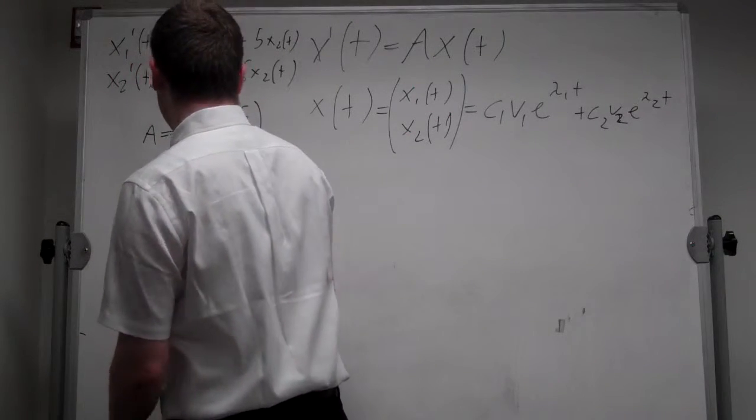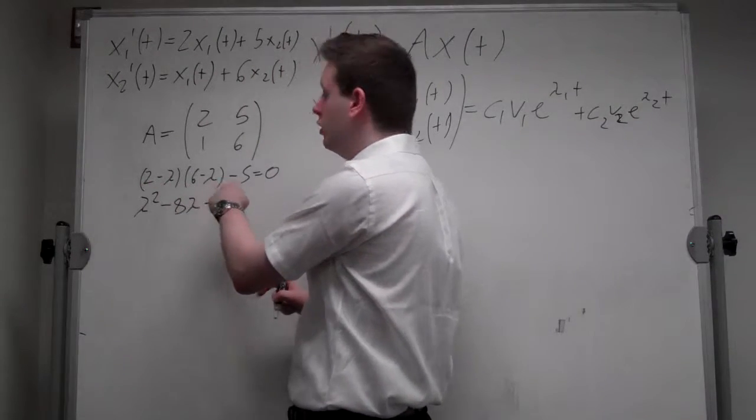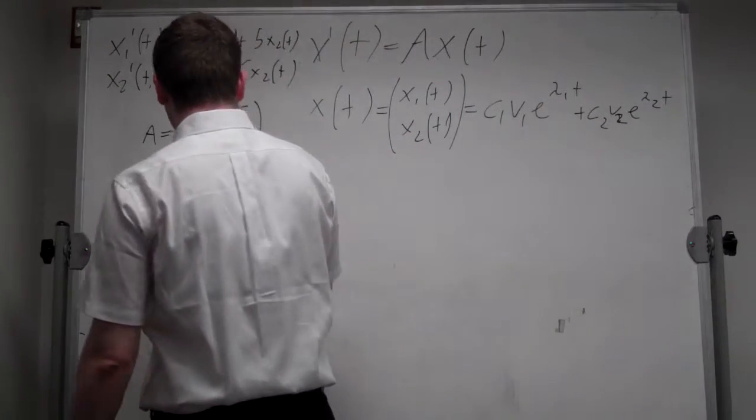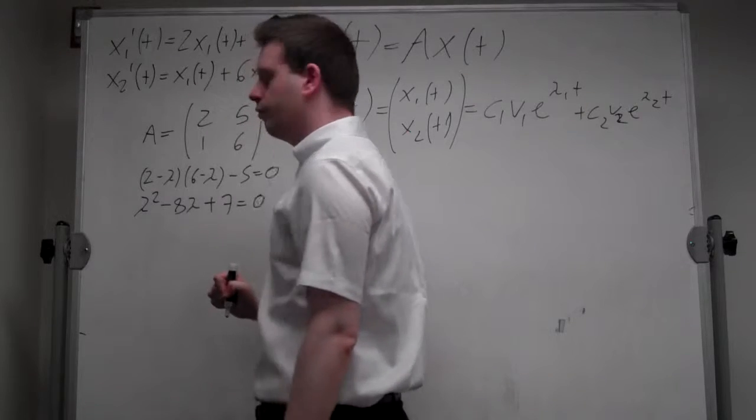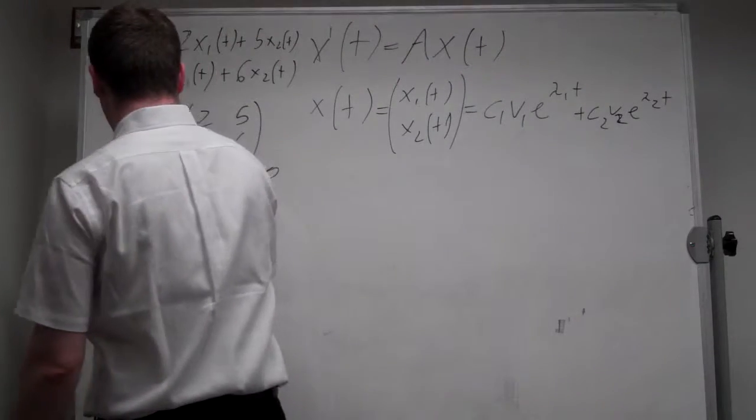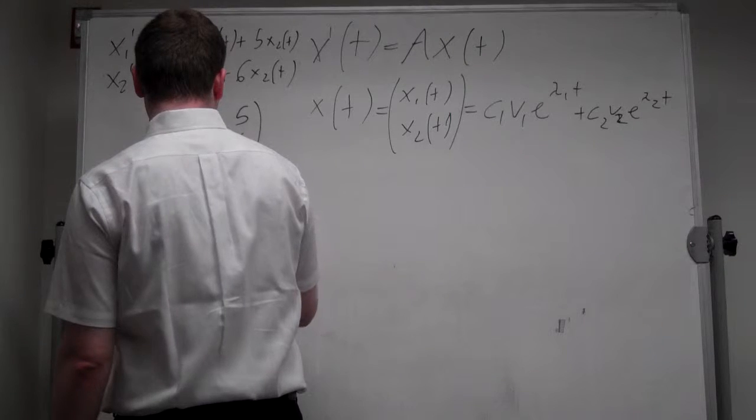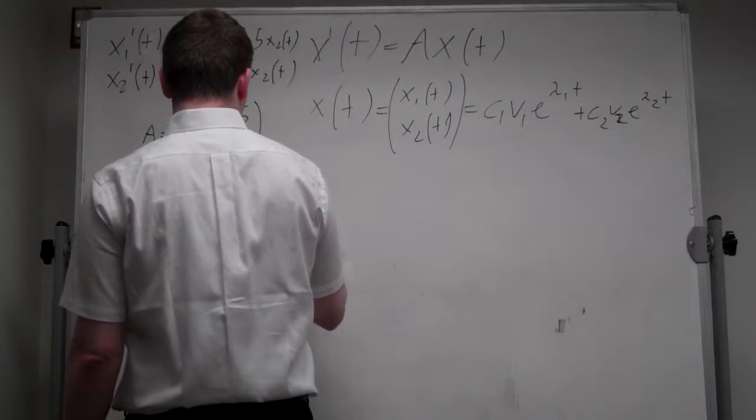This gives us lambda squared minus 8 lambda plus 2 times 6 is 12 minus 5 is 7 equals 0, from which we immediately get lambda 1 equals 1 and lambda 2 equals 7.